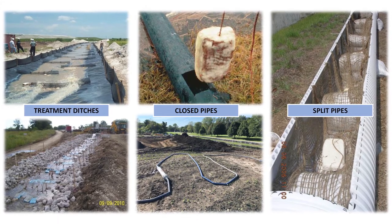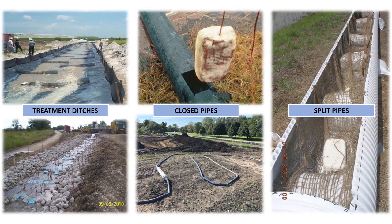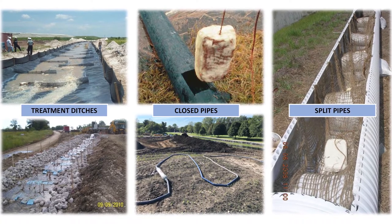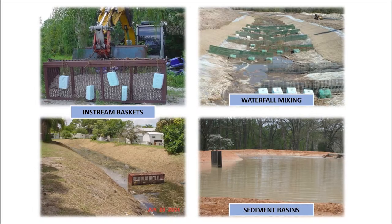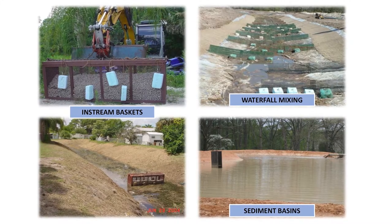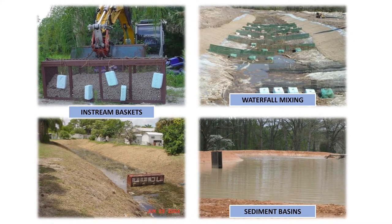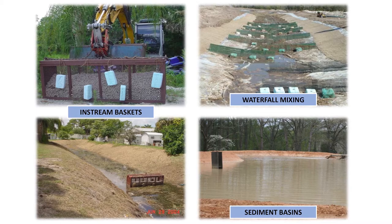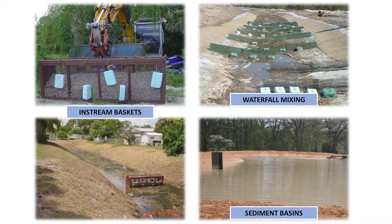Polymers are installed in the form of dry powder, a liquid emulsion, or in a block like soap on a rope. Powder and liquid polymers are applied with hydro-seeding or other spraying equipment. These installations are surface applied onto soil, erosion control matting, and geo-jute and dispersion fields, check dams, and upstream of particle curtains. Powders are surface applied and mixed into the top three feet of saturated sediments prior to removal. Polymer blocks are installed in treatment ditches, closed pipes, split pipes, in-stream baskets, waterfall mixing systems, and dewatering sediment basins.